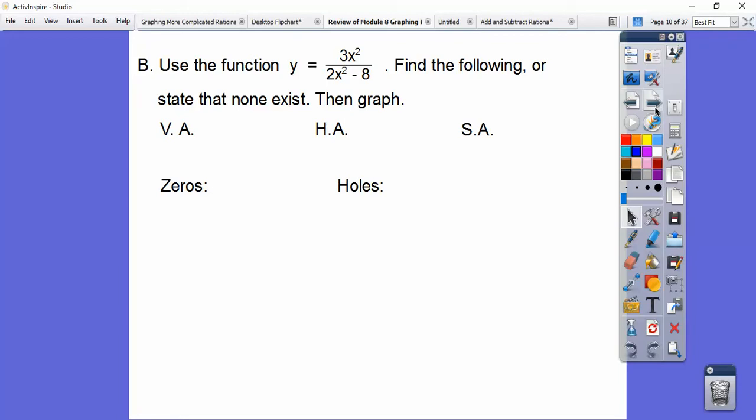Use this function, y equals 3x squared over 2x squared minus 8, and find the following, and if none exists, then state none, then graph. This would stand for vertical asymptote, horizontal asymptote, slant asymptote, zeros, and holes.